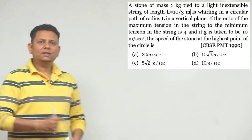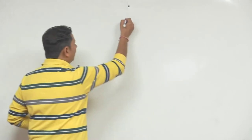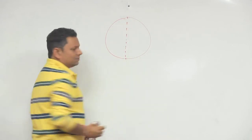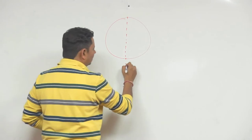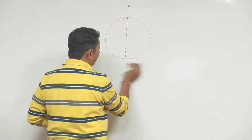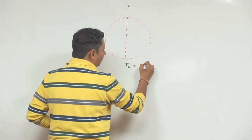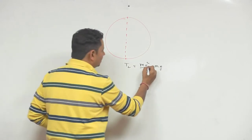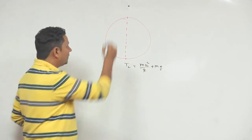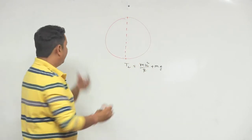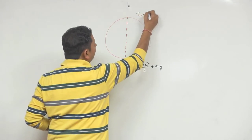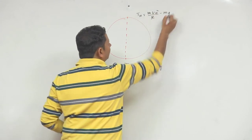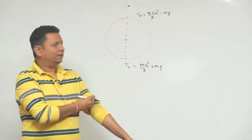यह vertical circle का सवाल है। Particle vertical circle में move कर रहा है। यह lowest point है और यह highest point है। Lowest point पे tension: T_lowest = mv²/r + mg। Highest point पे tension: T_highest = mv²_H/r − mg। यह lowest और highest point पे tension की values हैं।